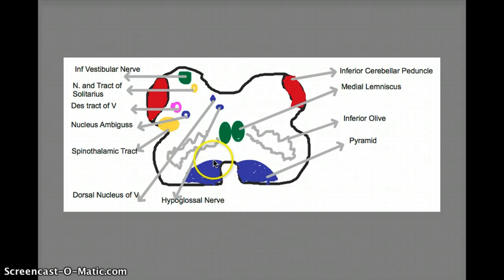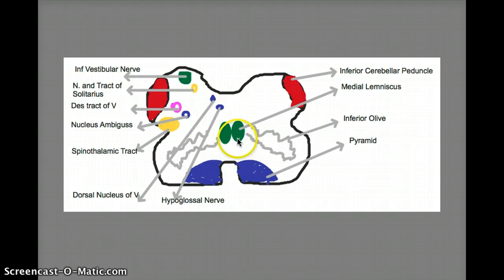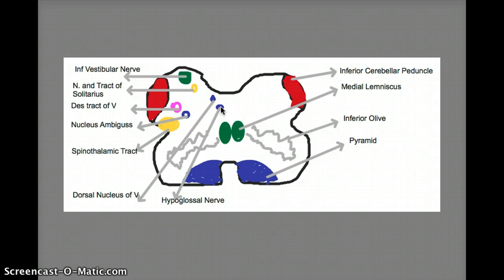This blue region right here is the pyramid. The pyramids contain the corticospinal tract, followed by these green regions here, which is the medial lemniscus, followed by the hypoglossal nucleus — the most medial structure. If you watch my medial medullary syndrome video, you will see that the hypoglossal nerve is part of that syndrome. The hypoglossal nucleus is cranial nerve 12, and it is not part of the lateral medulla.